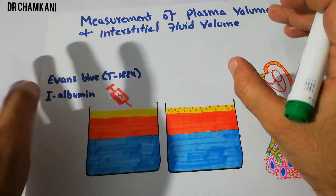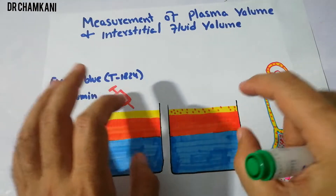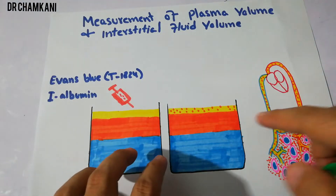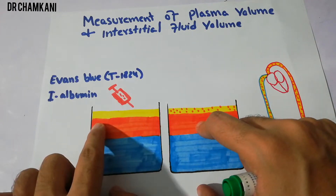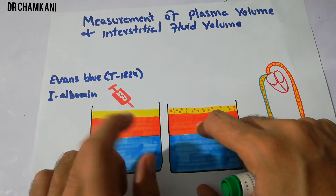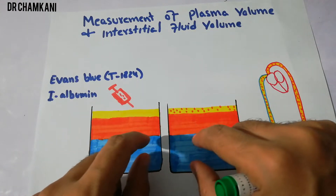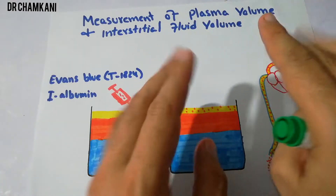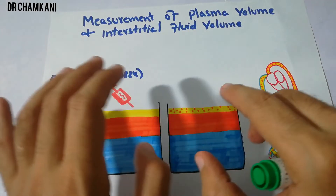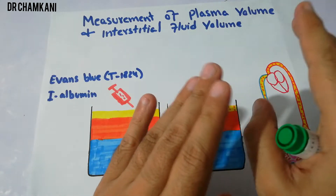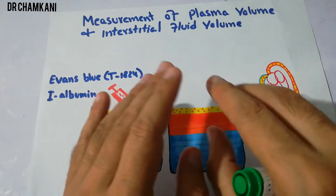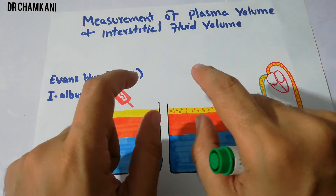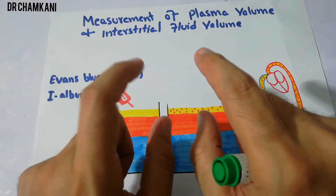There is around 42 liters of fluid in the body, distributed into plasma and interstitial fluid — both of which make up the extracellular fluid — and then there is the intracellular fluid. We previously measured total body water and extracellular fluid volume using the indicator dilution method.